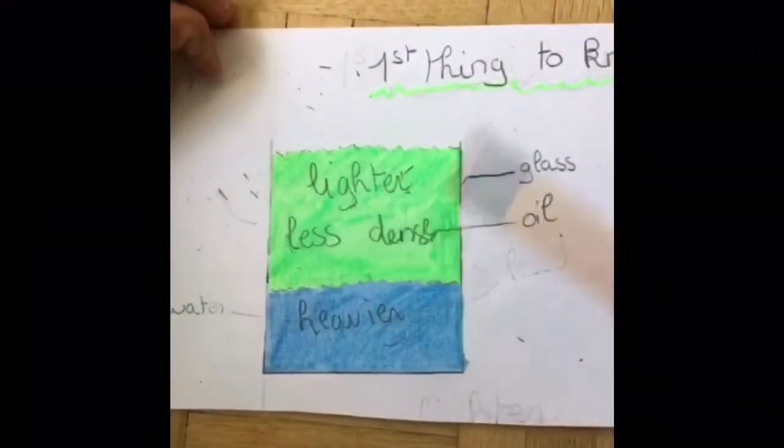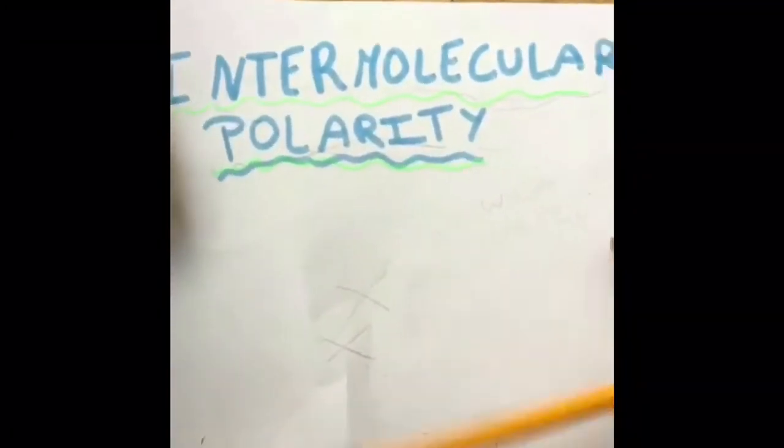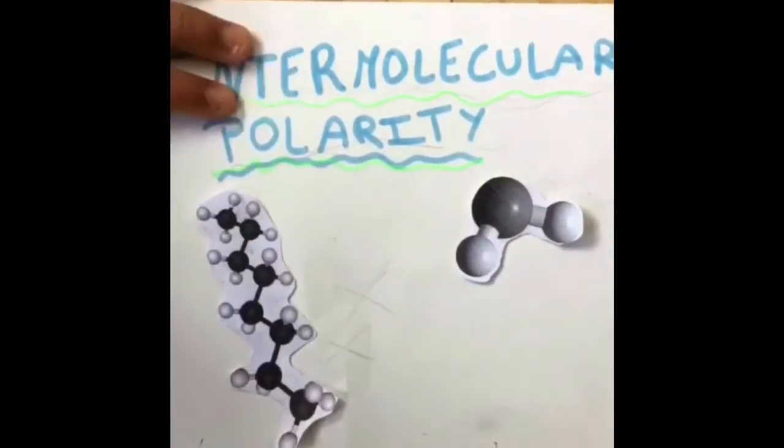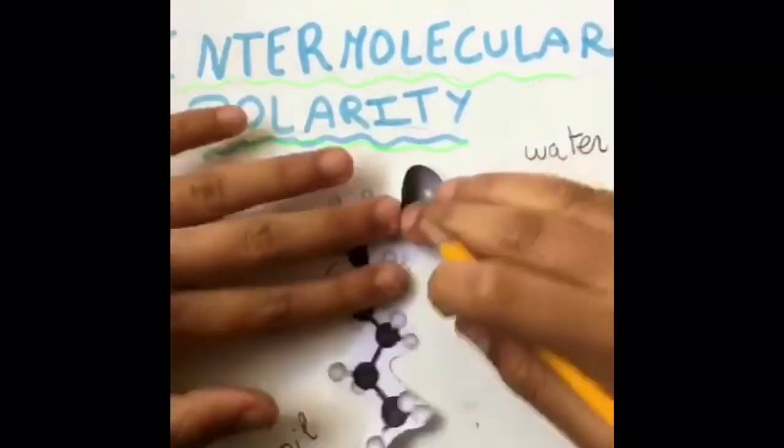So the oil and water do not mix because of something called intermolecular polarity. To explain it in the most simple way possible, it is when two molecules, in this case water molecules and oil molecules, are not built to combine and form.